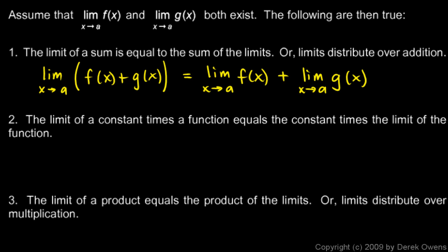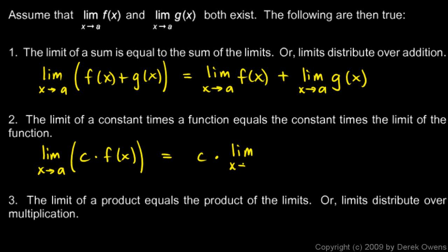Number two: the limit of a constant times a function equals the constant times the limit of the function. In mathematical notation: the limit as x approaches a of c·f(x) equals c times the limit as x approaches a of f(x), where c is a constant. In other words, the constant multiplier can just be moved outside of the limit.